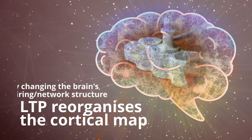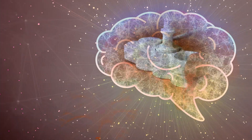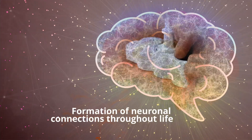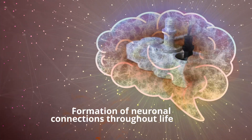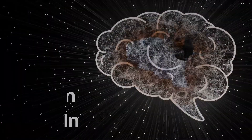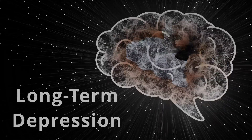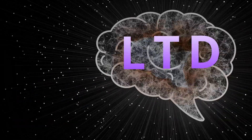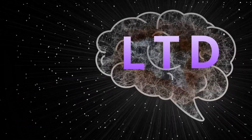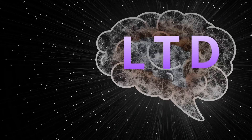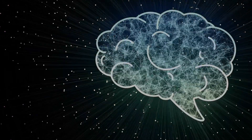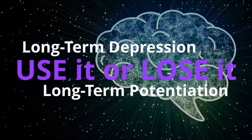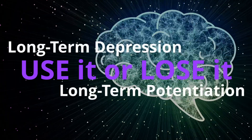The growth and reorganization is what allows for the formation of neuronal connections throughout life. Paired with this is long-term depression, LTD, which leads to the weakening of synaptic connections so that the brain remains efficient. This is where the concept of the use-it-or-lose-it principle comes from.